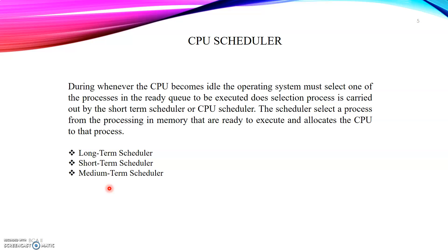What is a CPU scheduler? When the CPU becomes idle, the operating system must select one of the processes in the ready queue to be executed. This selection process is carried out by the short-term scheduler, also known as the CPU scheduler. It selects a process from the processes in memory that are ready to execute and allocates the CPU to that process.